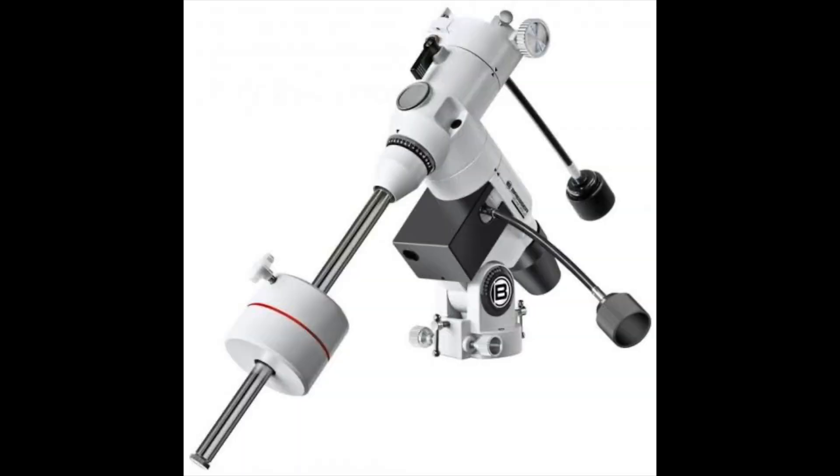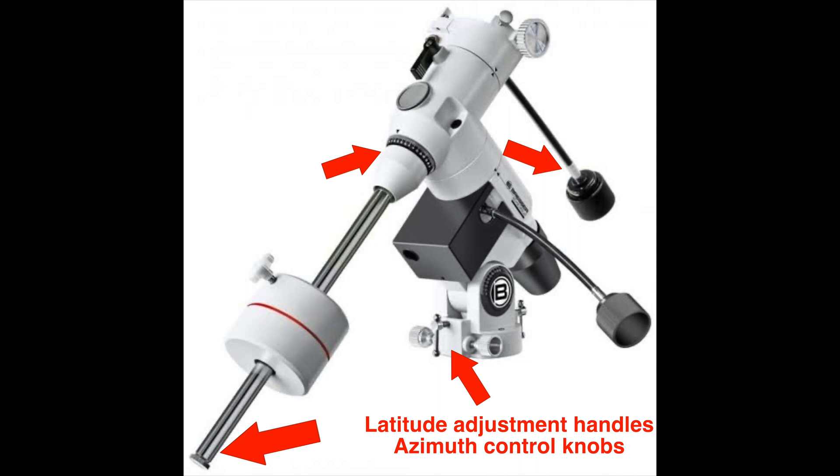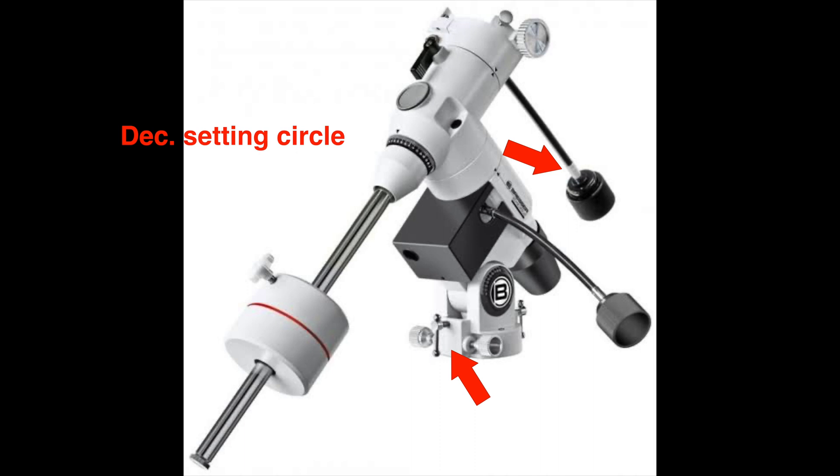There are a few things we should take into account. First, there are slow motion controls to fine-tune the movement of the telescope. Then we have the counterweight safety pin - even if you lock the counterweight correctly, don't forget the safety gap. We have the latitude adjustment handle and the azimuth control knobs to set the latitude of your location, the DEC setting circle as well as the RA setting circle.